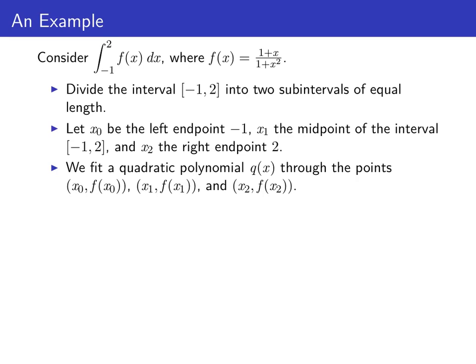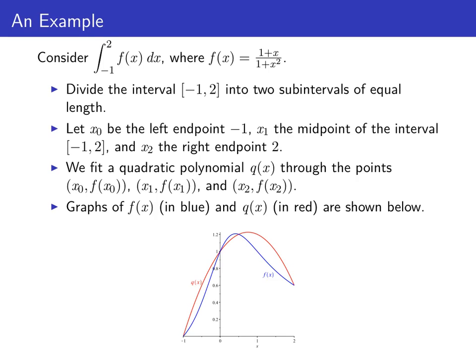Now what we do is we fit a quadratic polynomial q(x) through these three points: (x₀, f(x₀)), (x₁, f(x₁)), and (x₂, f(x₂)). Here we see the graph of f in blue and the graph of q in red. And you can see that q is a quadratic that passes through the three points that we've selected.